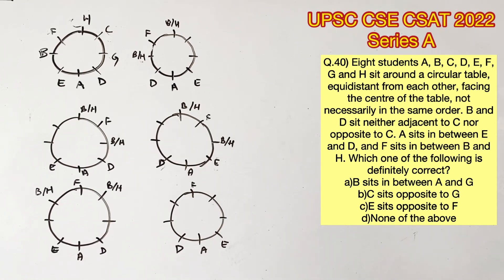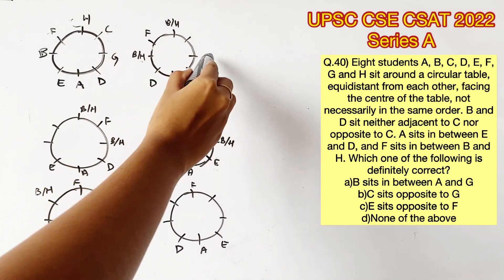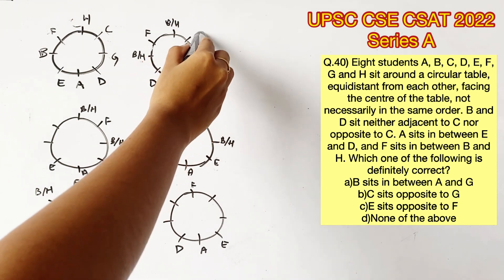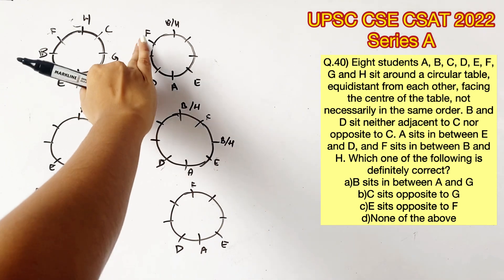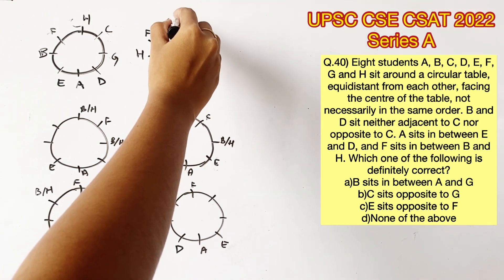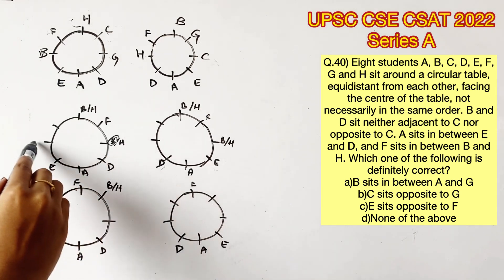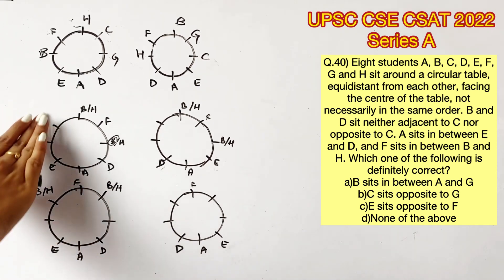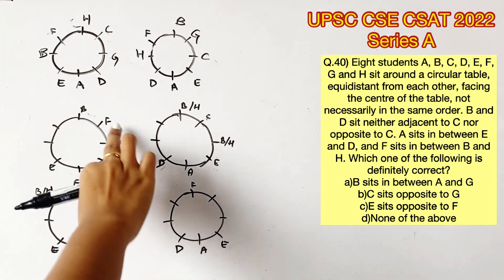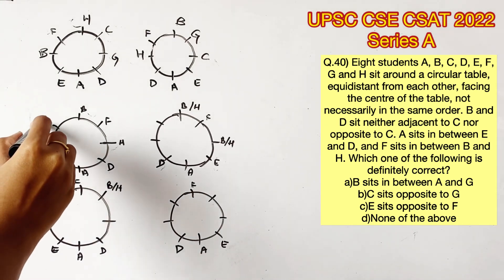Likewise, we'll check all the circles. In the second circle, if B is in this position, C cannot be opposite to B or opposite to D, leaving no place for C. So this has to be H and this will be B. This position will be occupied by G and this by C. Moving to the next circle — remember, B and D should neither be opposite nor adjacent to C. So this cannot be C if B had occupied the position, meaning this has to be B and this has to be H. There is now a place for C and G here.